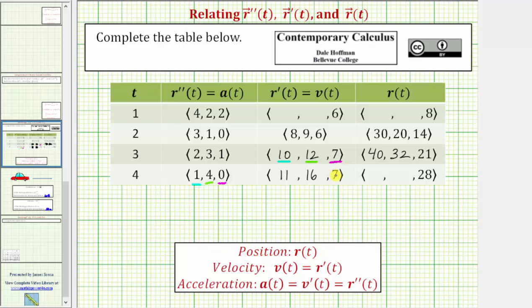Checking the velocity in the z direction, it starts at seven. For the next second, the acceleration is zero, which does not change the velocity. The velocity remains seven meters per second in the z direction.